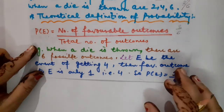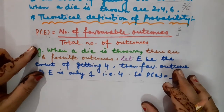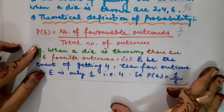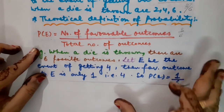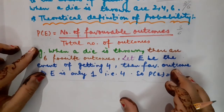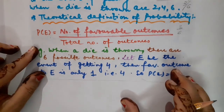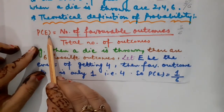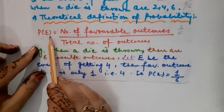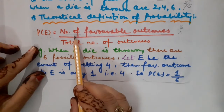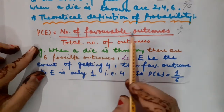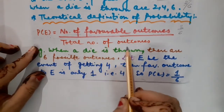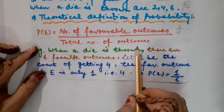So children, let us quickly give a recall to the theoretical definition of probability. Probability of an event is equal to number of favorable outcomes upon total number of outcomes.